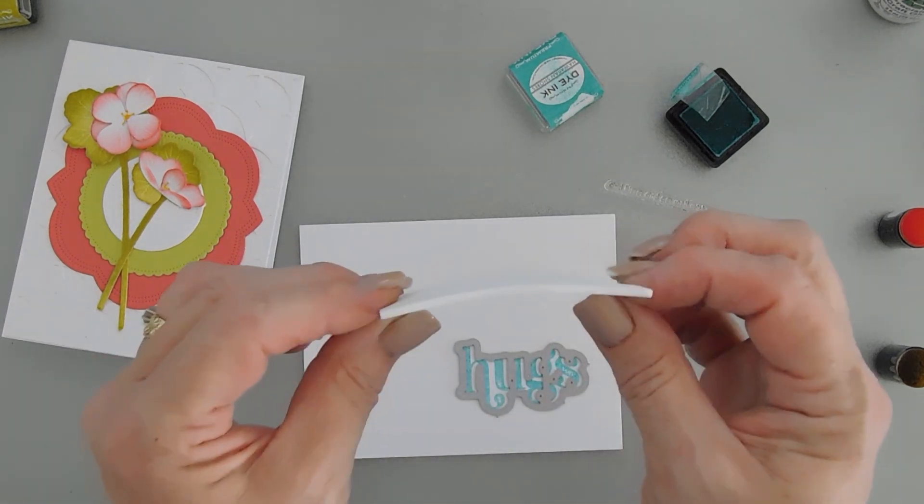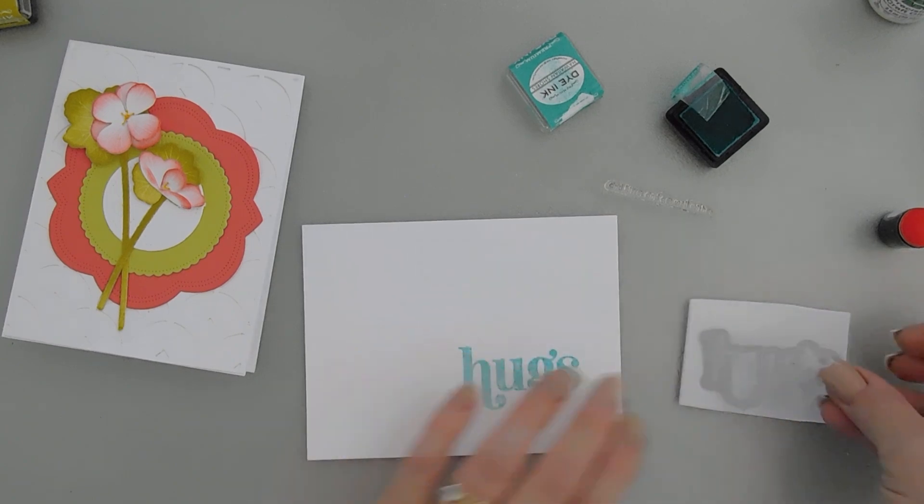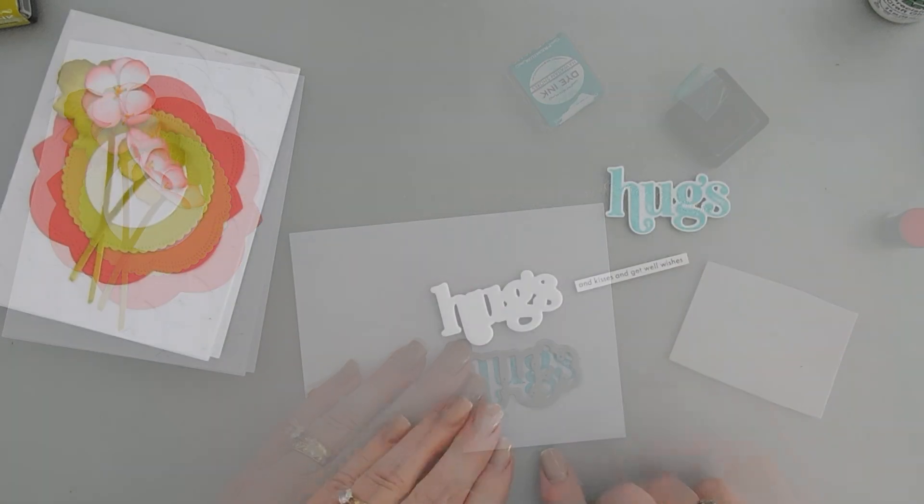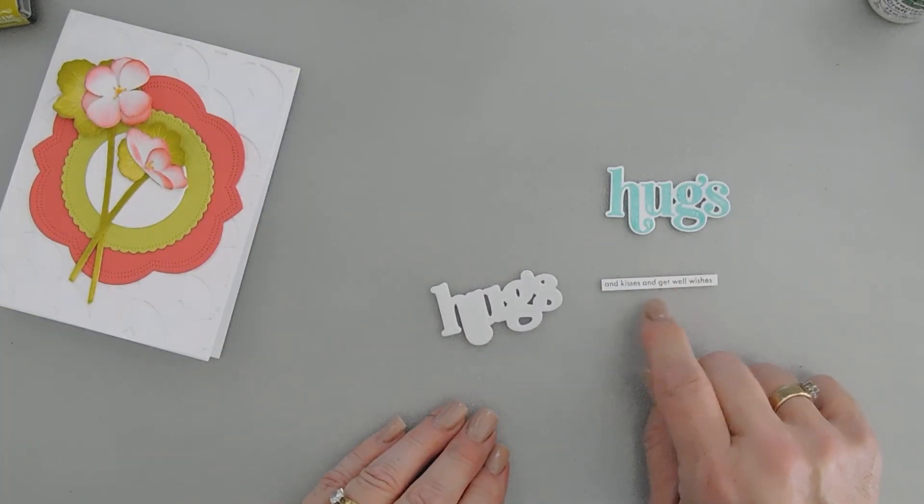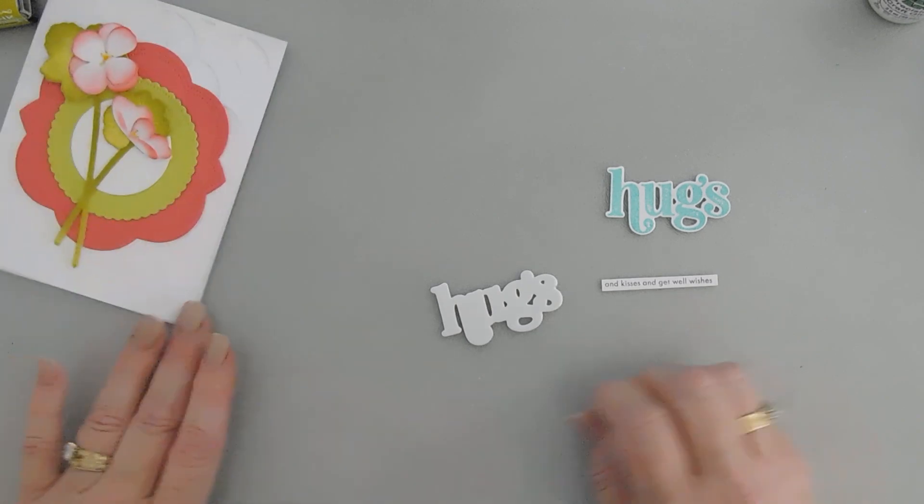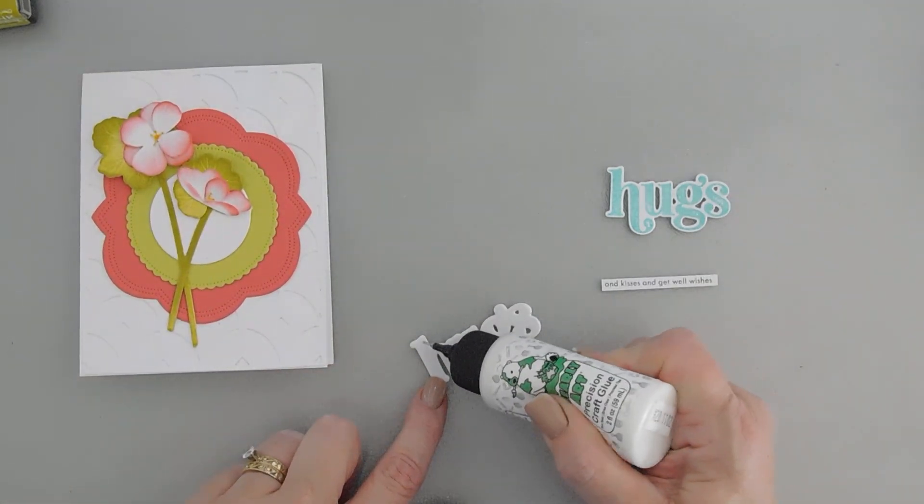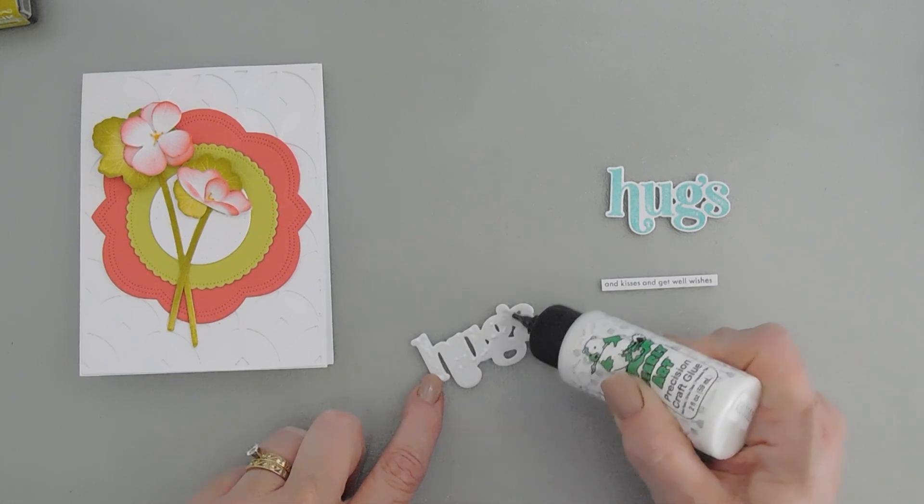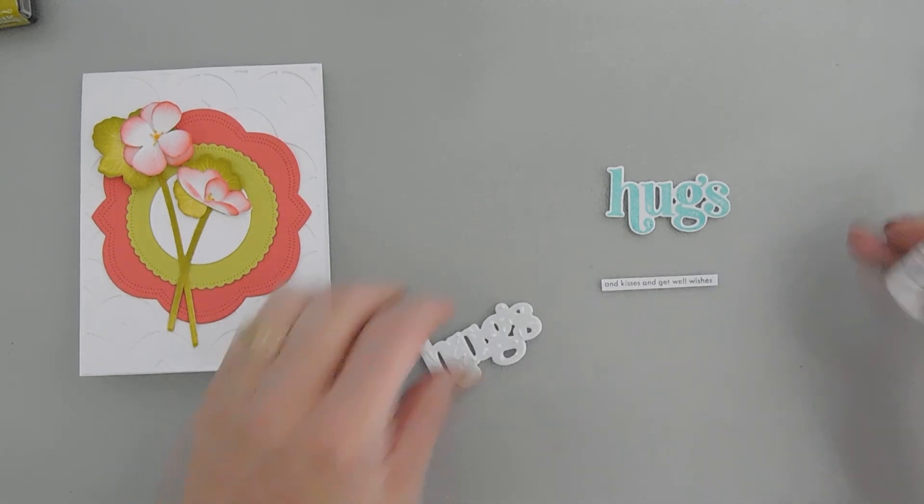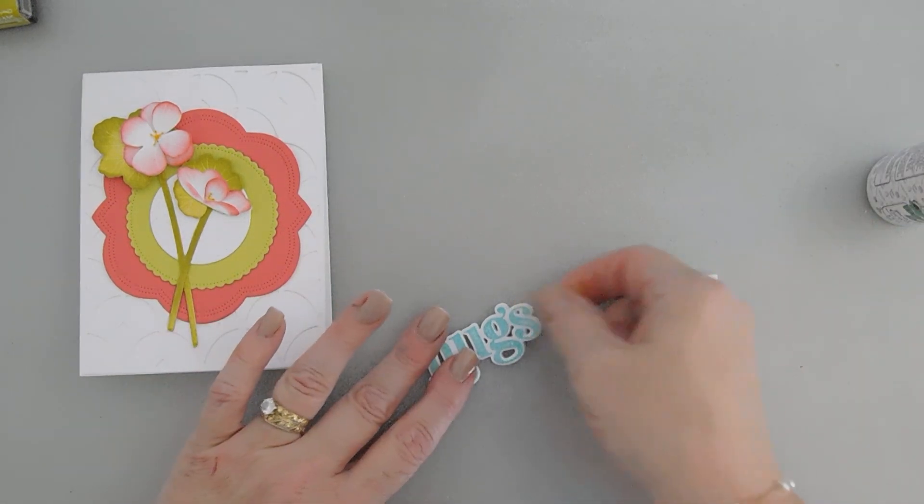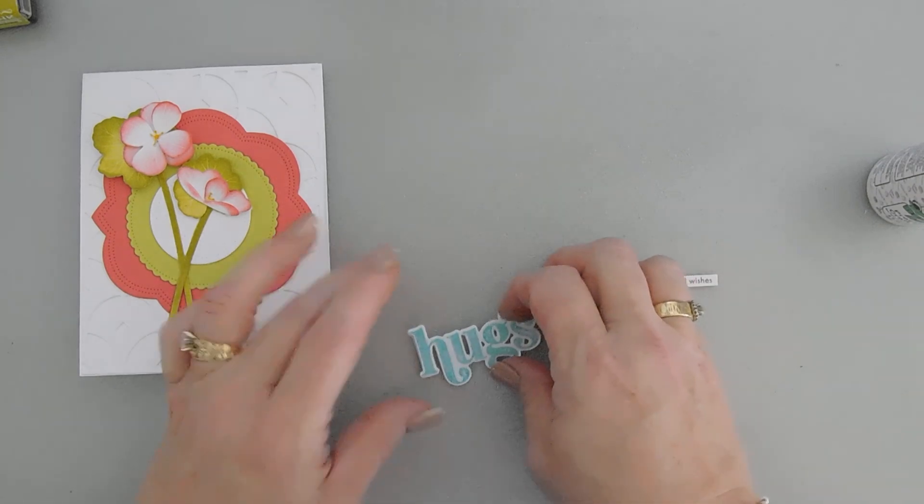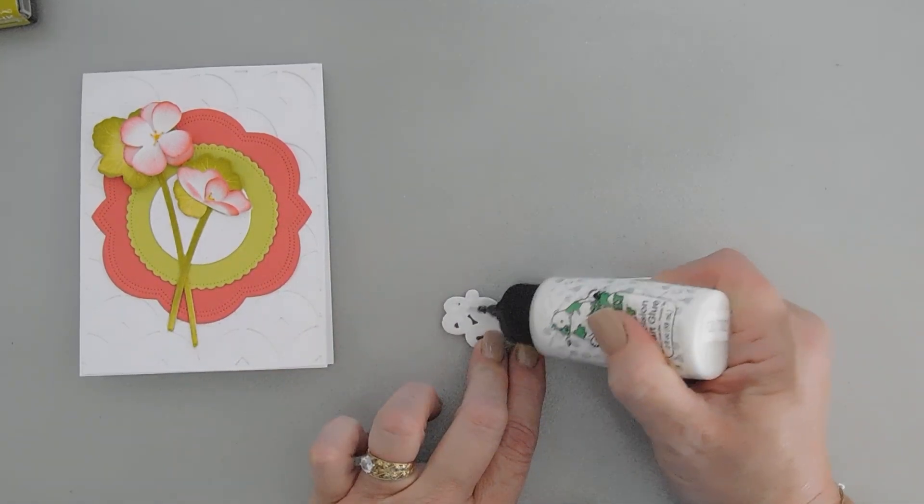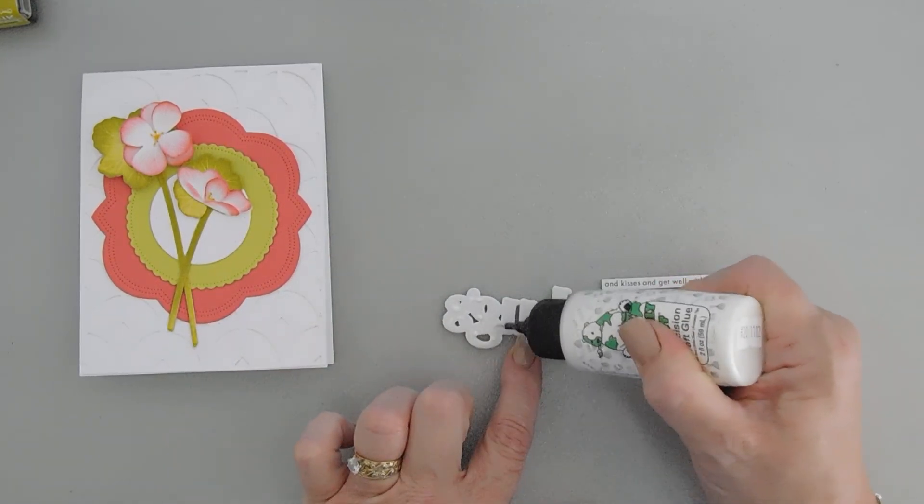And then I'm also going to take a piece of foam, and I'll die cut out the Hugs with foam also. I also stamped my secondary sentiment. We're going to go ahead and layer our Hugs on our foam for a little bit of dimension. This is such a pretty font. I'll flip this around. I will add some glue behind here, and we will add this to our card base.